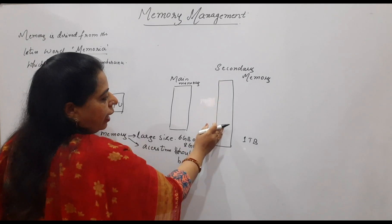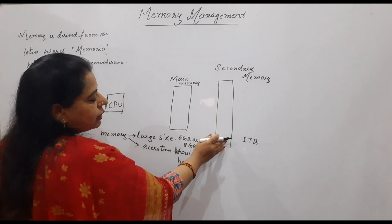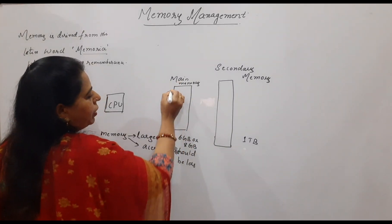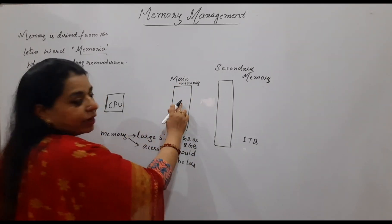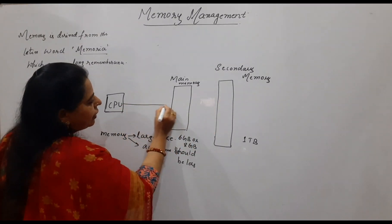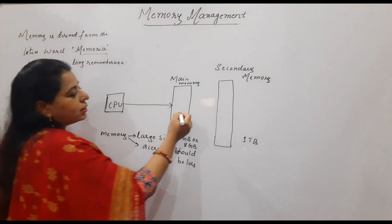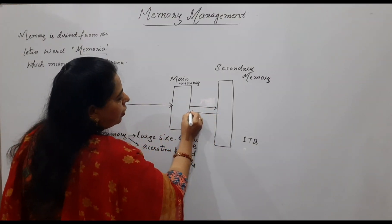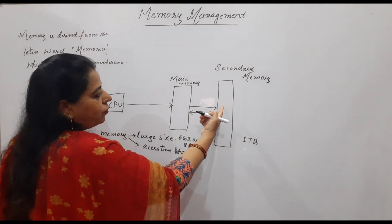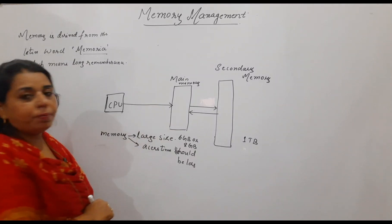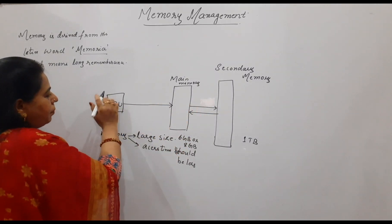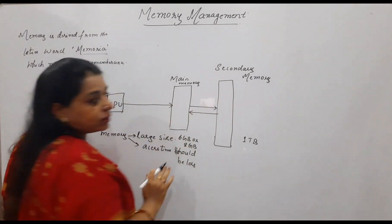The CPU can access any instruction from the main memory or the physical memory in a very less amount of time. As soon as a user types the program, it gets stored in the secondary memory. During the time of execution, the programs are loaded into the main memory. So the CPU can access directly from the main memory, not from the secondary memory. Contents from the main memory can also be moved to the secondary memory and vice versa.